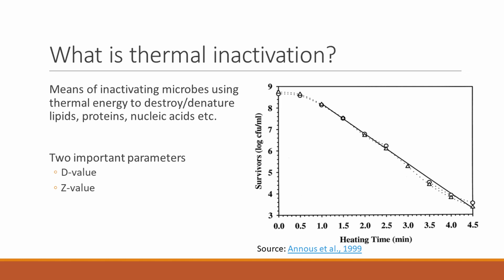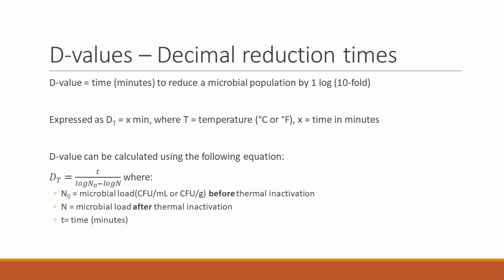Two important parameters that we will discuss in this video include the D and Z values. Decimal reduction time, or D value, refers to the time in minutes that is required to reduce a microbial population by one log or tenfold at a given temperature.